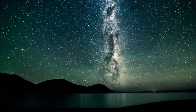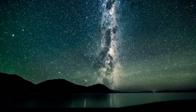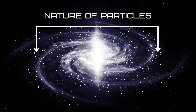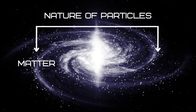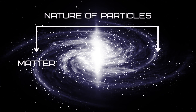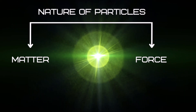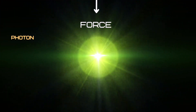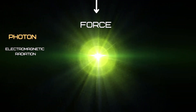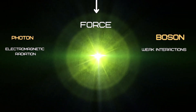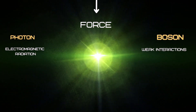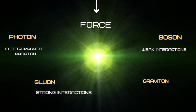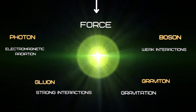Before we get to the real answer, we need to classify the universe's fundamental particles into two categories: matter particles and force particles. For instance, the photon is responsible for electromagnetic radiation, bosons for weak interactions, gluons for strong interactions, and gravitons obviously for gravitation.